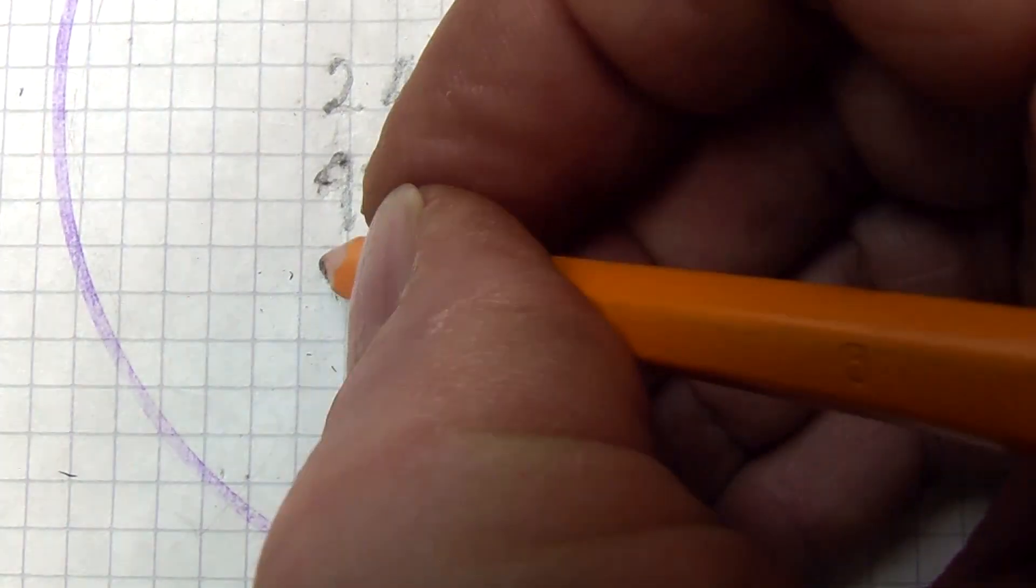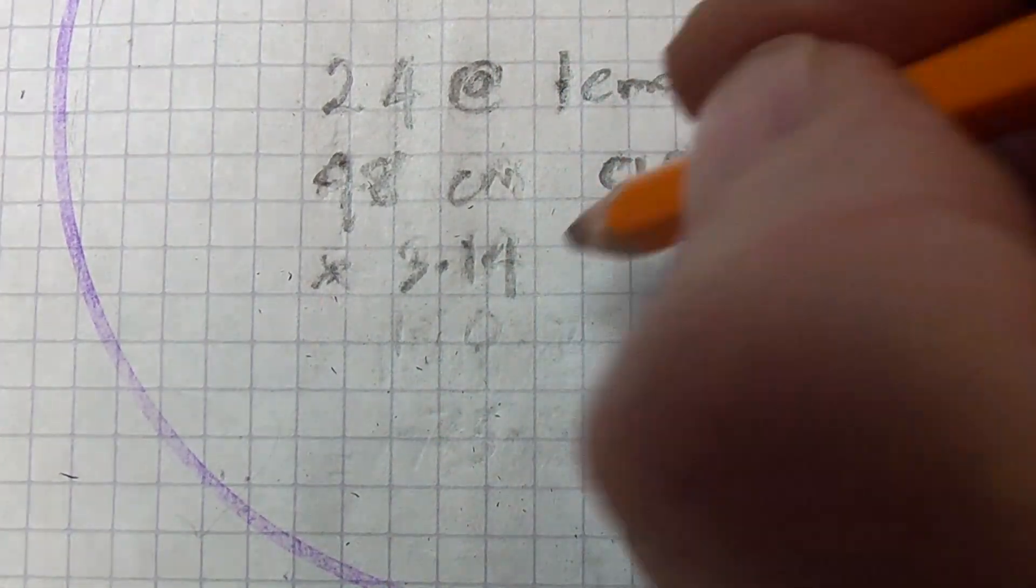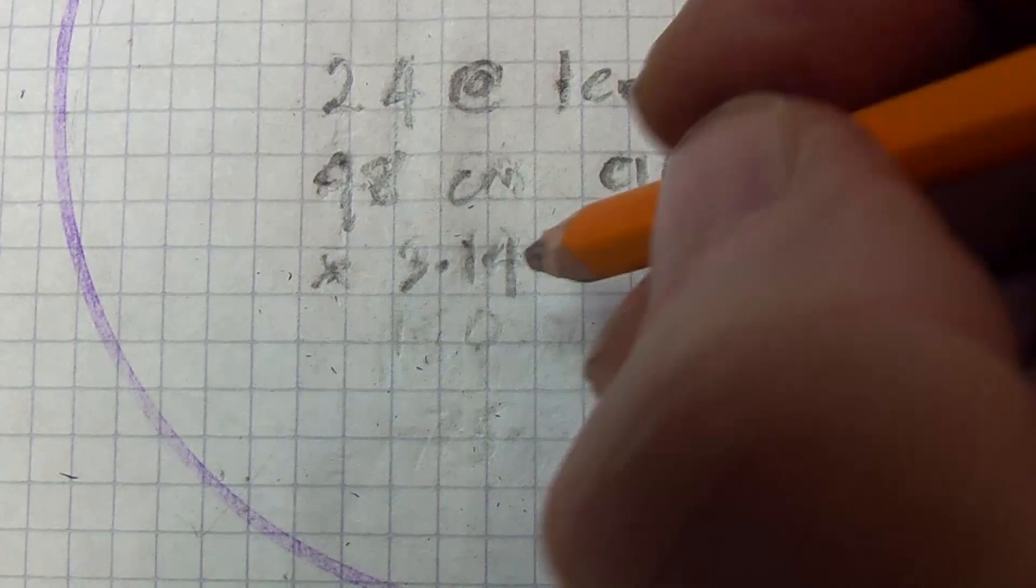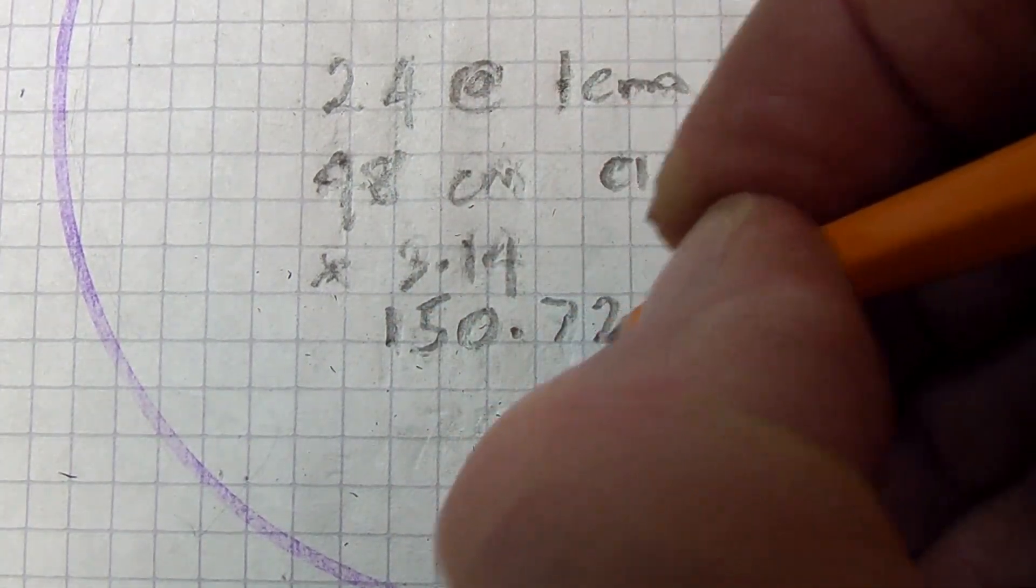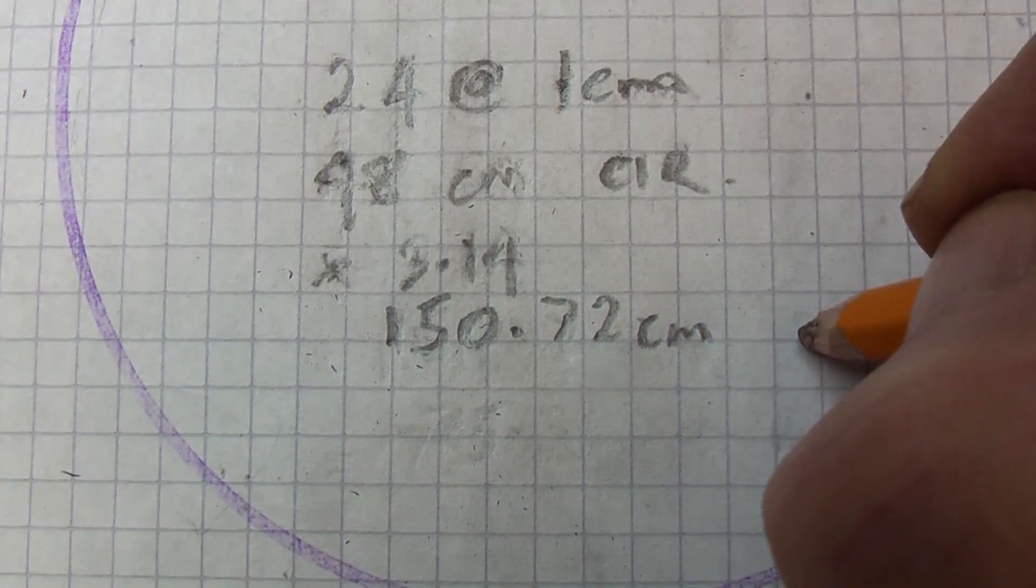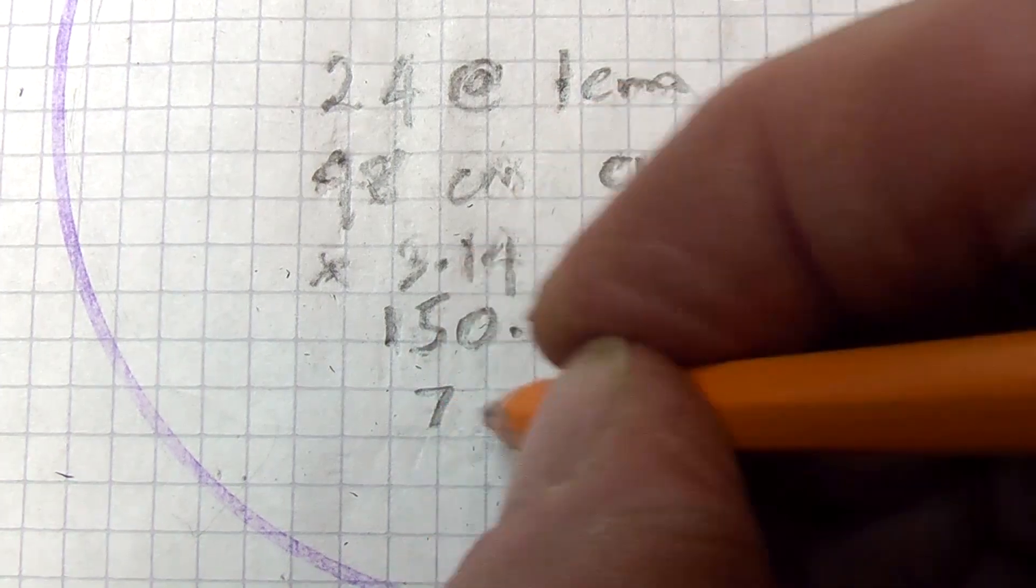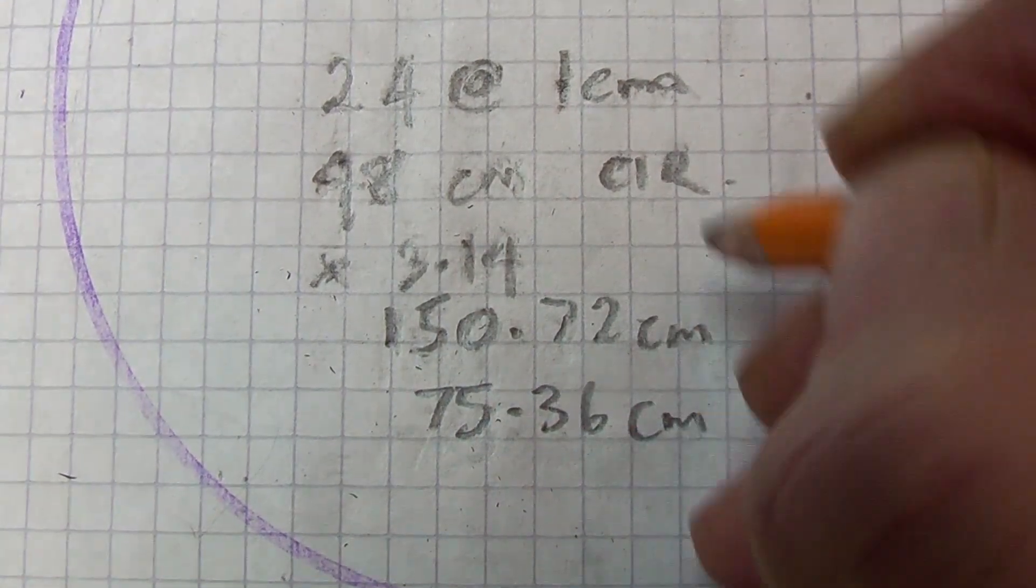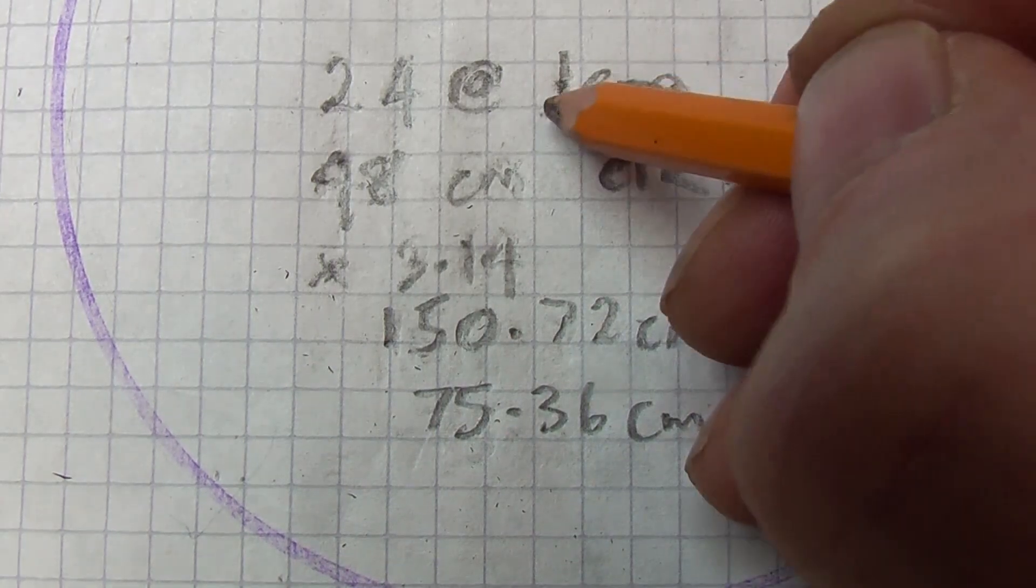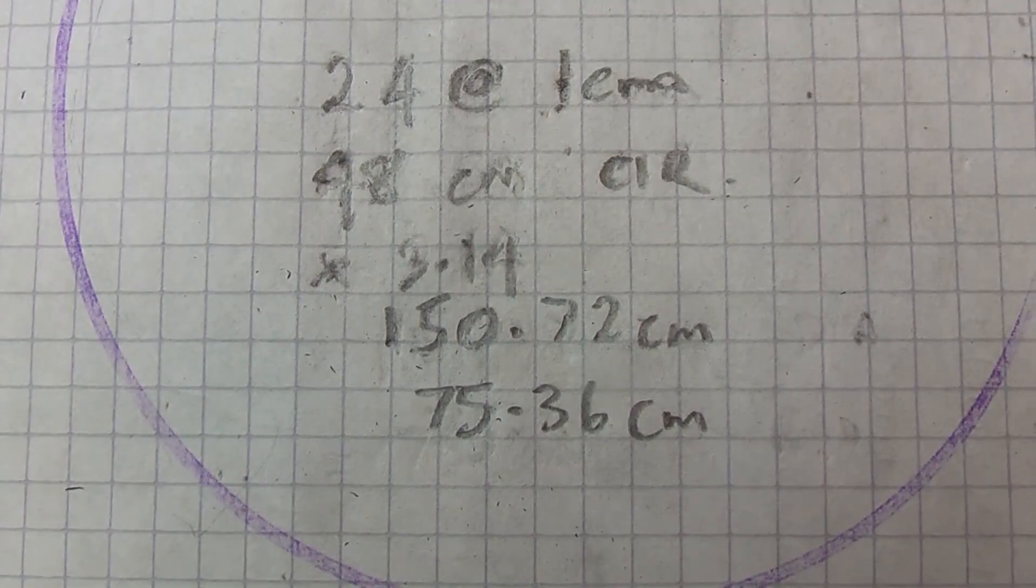Now to find the diameter, we are going to have to times that by Pi, which is 3.14, which is close enough for us here, and that is going to give us 150.72 centimeters in diameter, and to get the radius, divide that by 2, and we are going to get 75.36 centimeters as that radius, so that we know that distance there, to maintain that critical distance and size of that circle.